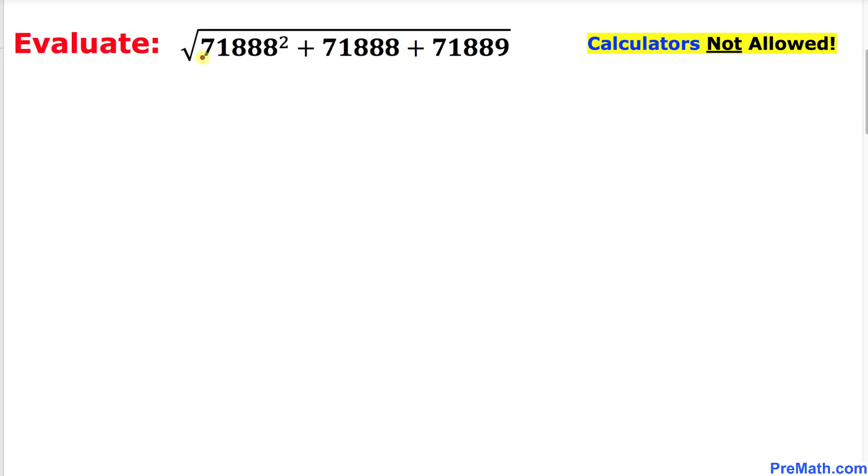We can observe that this number 71888 and this number 71888 are identical - they are the same numbers. And this number 71889 is one more than this number, so this could be tweaked to 71888 plus one.